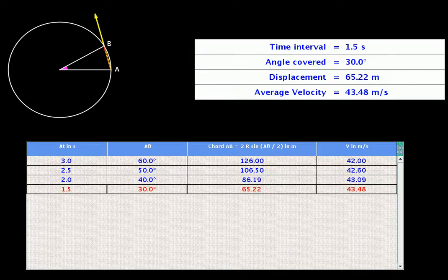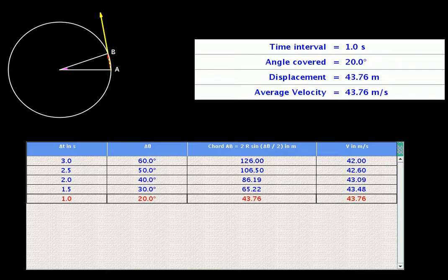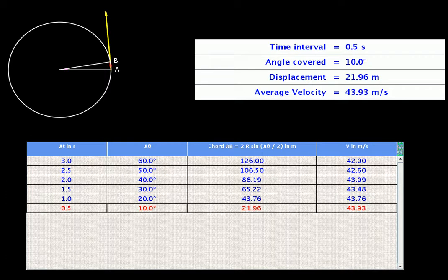Let us make the duration smaller by 0.5 seconds every time and calculate the average velocities. We observe that these values shown in the last column getting closer to 44 meters per second as duration gets smaller.